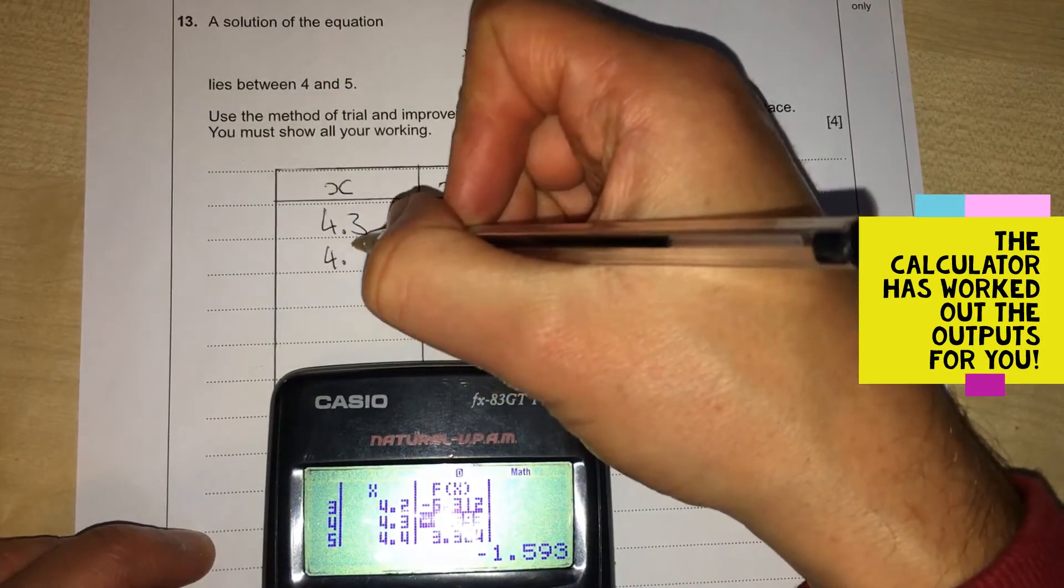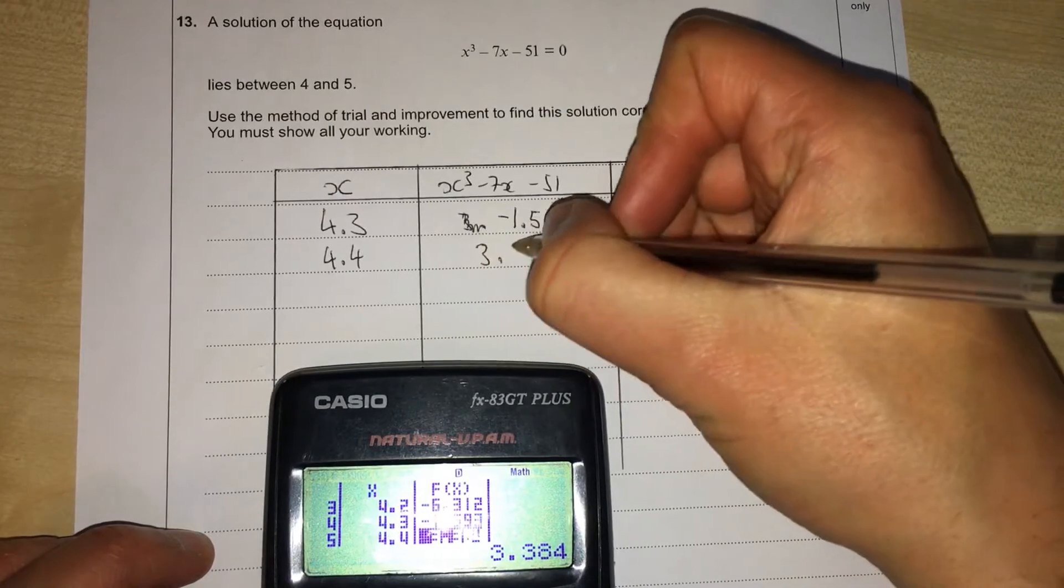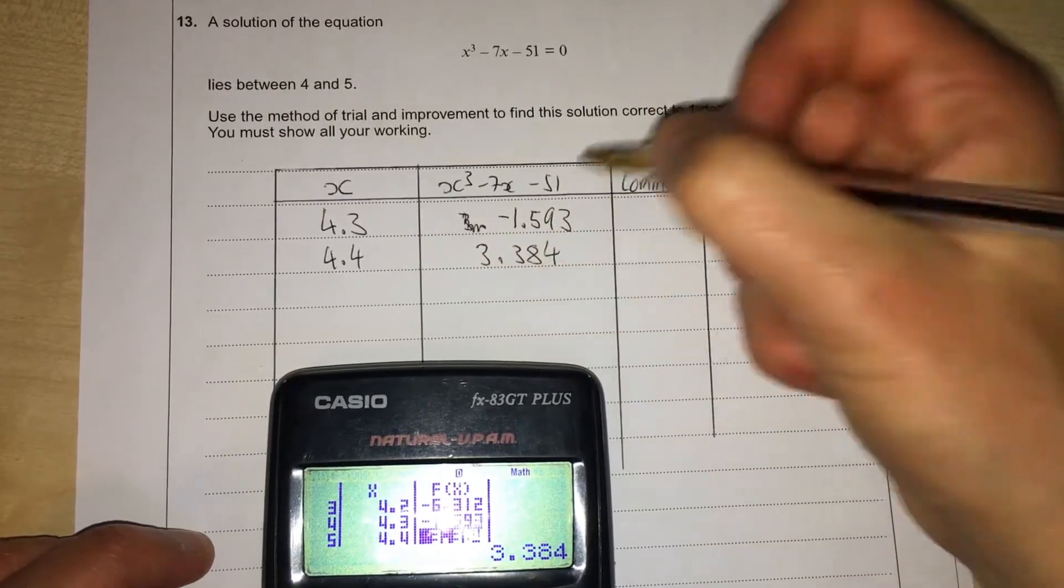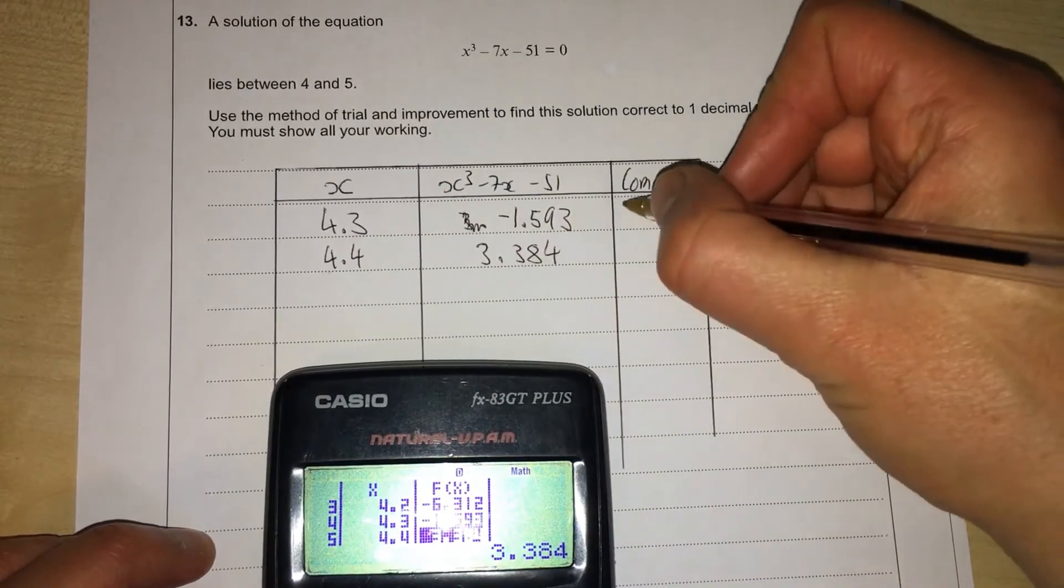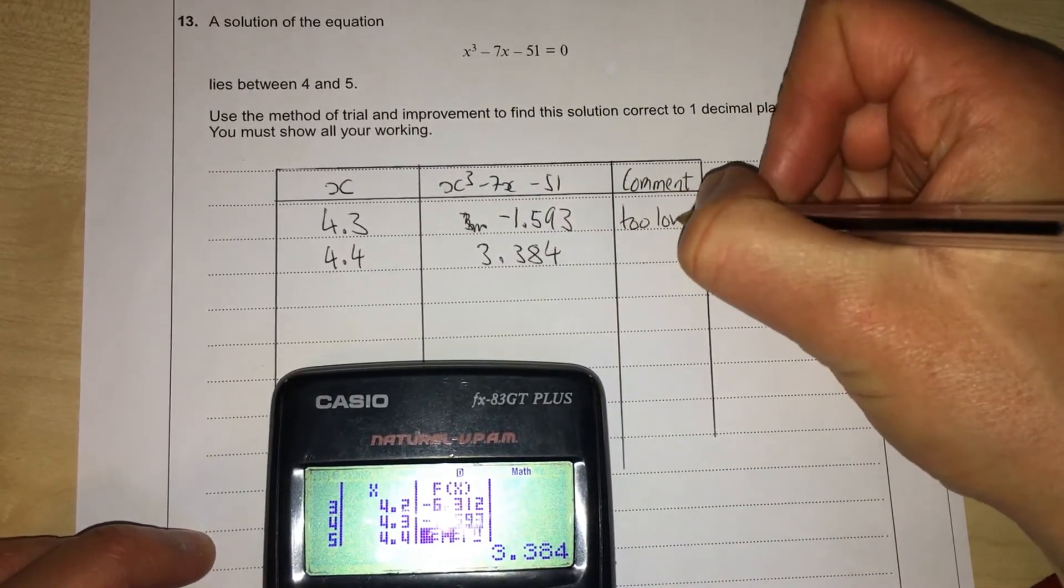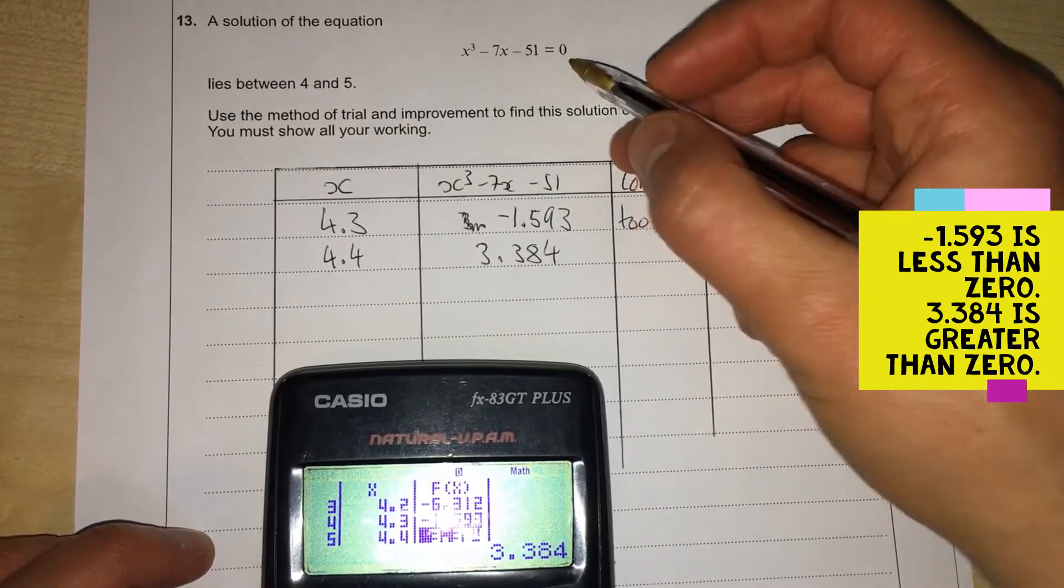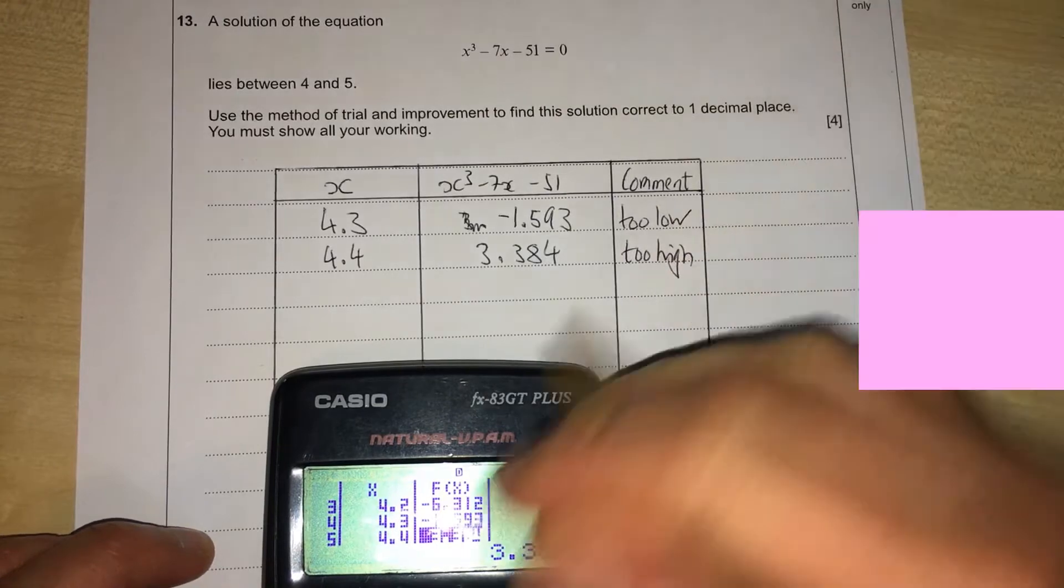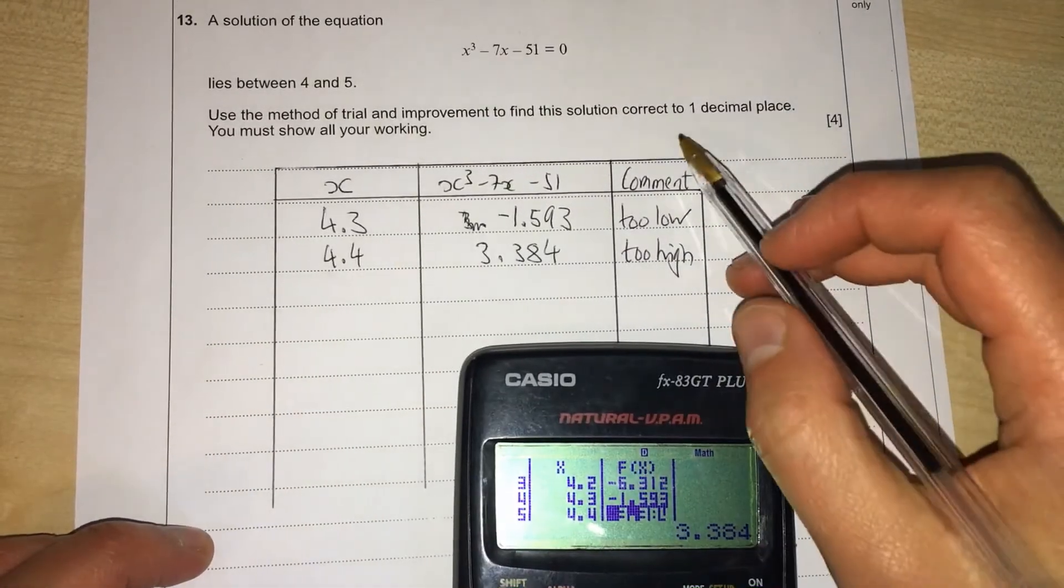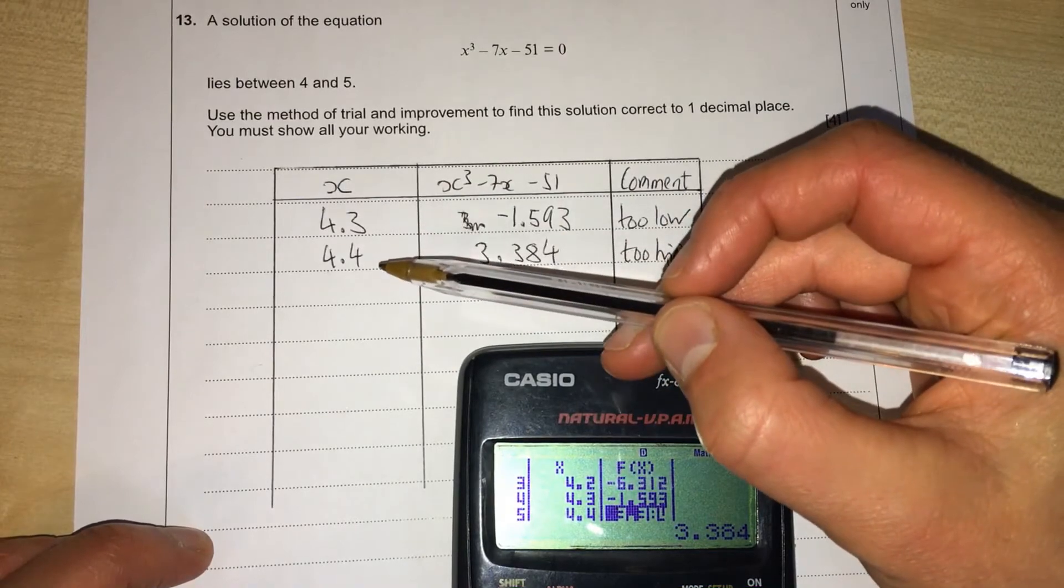When we put in 4.4 we get 3.384. Now we want the answer to be zero, so this negative value here is too low, and this positive value is too high. We only need our answer correct to one decimal place, so one of these is correct, but we need to work out which one it's closest to.